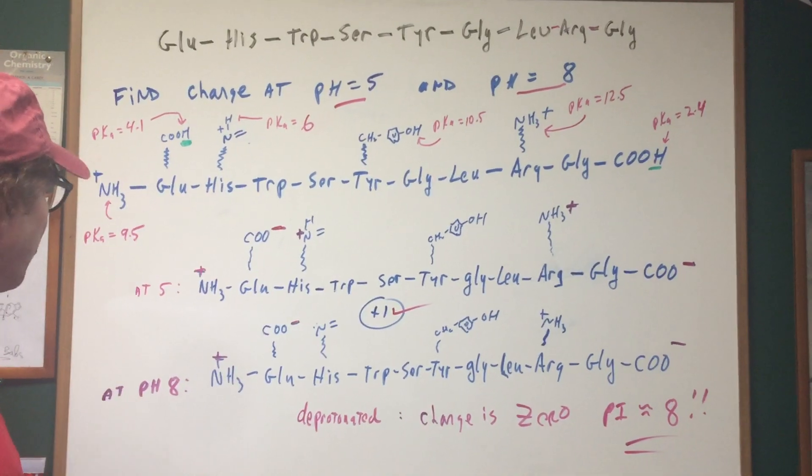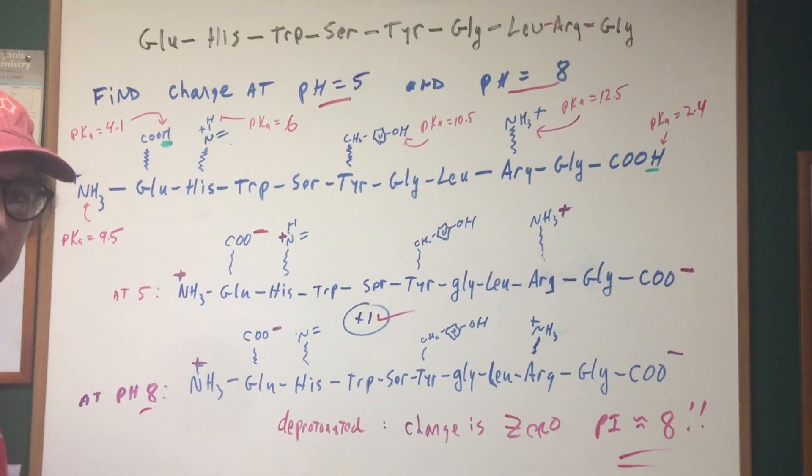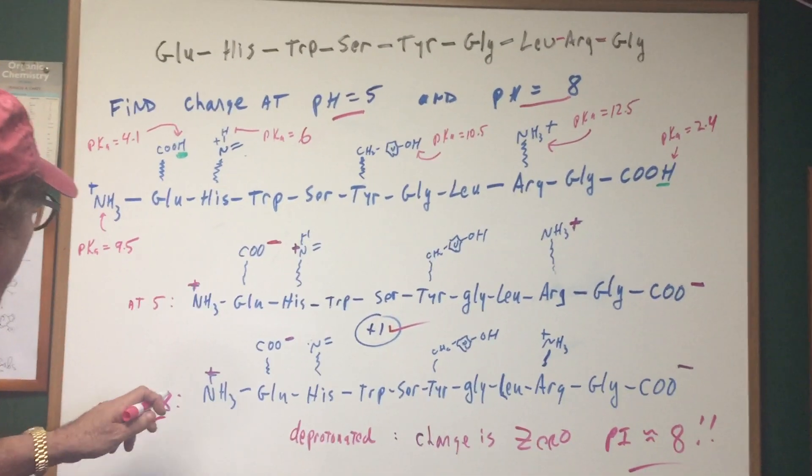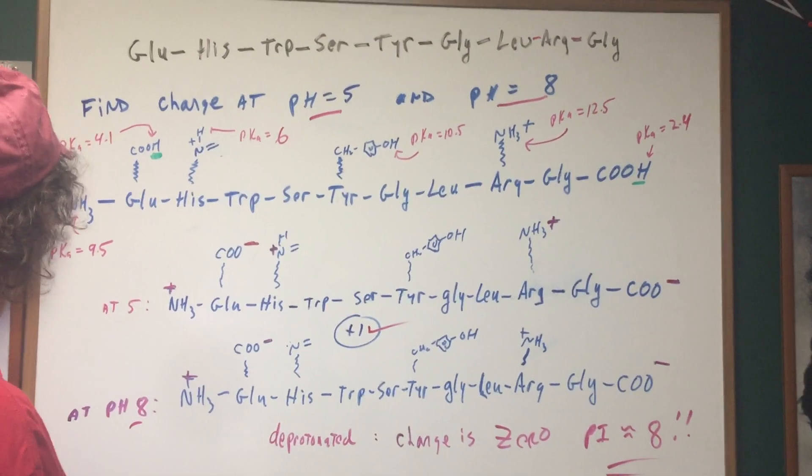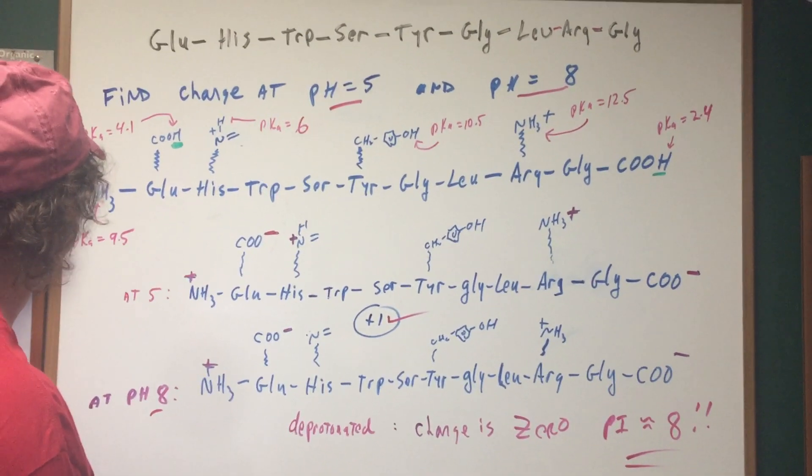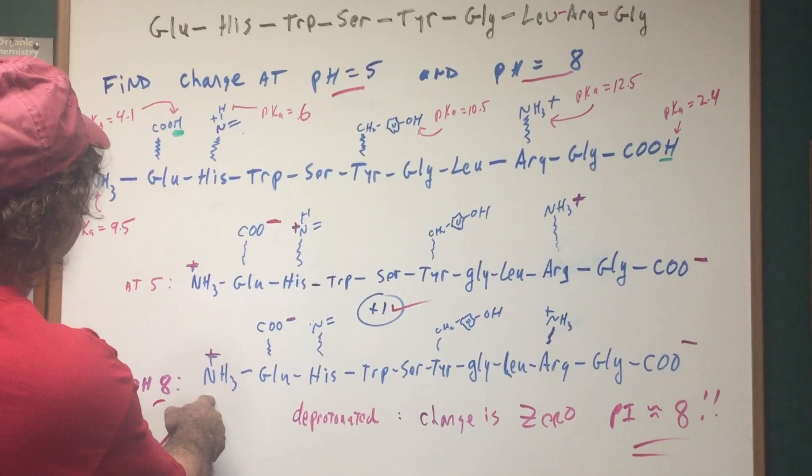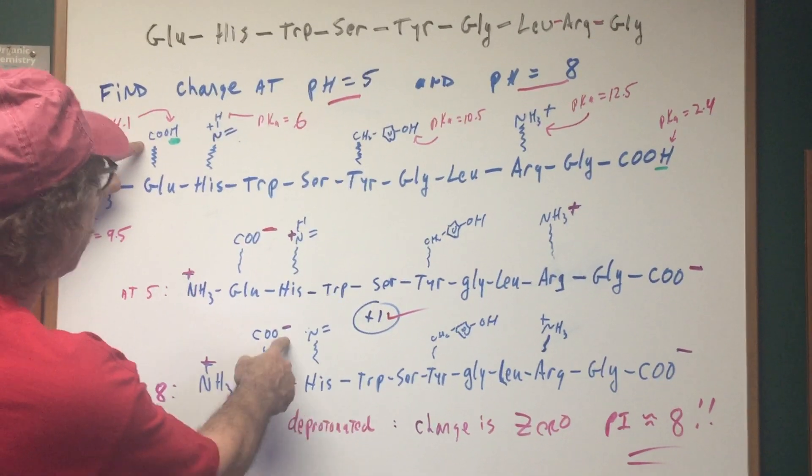Now let's raise the pH to say something like eight, like the small intestine. At a pH of eight, well, first of all, we go back to here, nothing much is going to happen till 9.5. So this stays protonated. This guy is long gone.